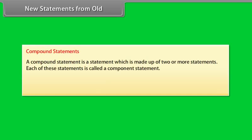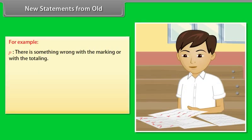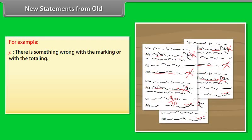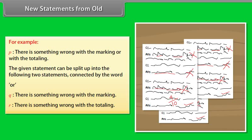A compound statement is a statement made up of two or more statements. Each of these is called a component statement. By using connective words like 'and' or 'or,' we can combine two statements to form a compound statement. For example, P: 'There is something wrong with the marking or with the totaling.' This can be split into Q: 'There is something wrong with the marking,' and R: 'There is something wrong with the totaling,' connected by the word 'or.'